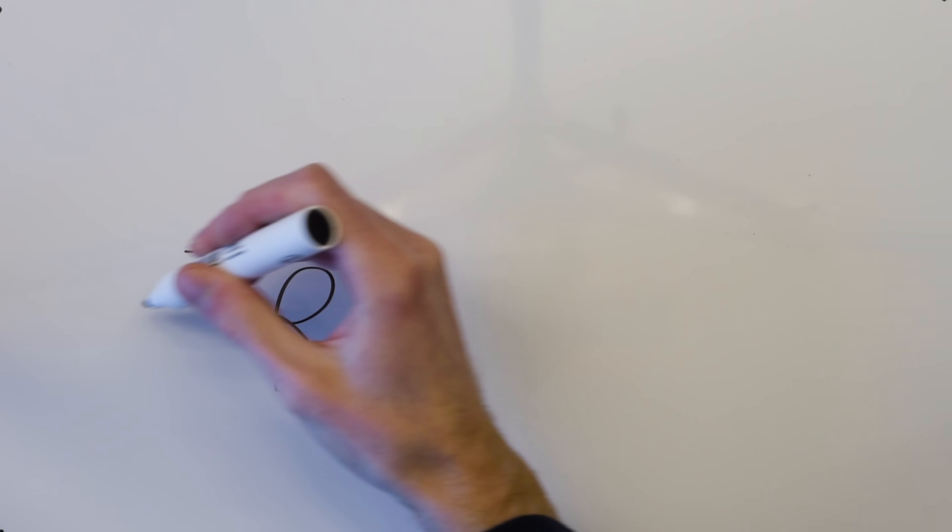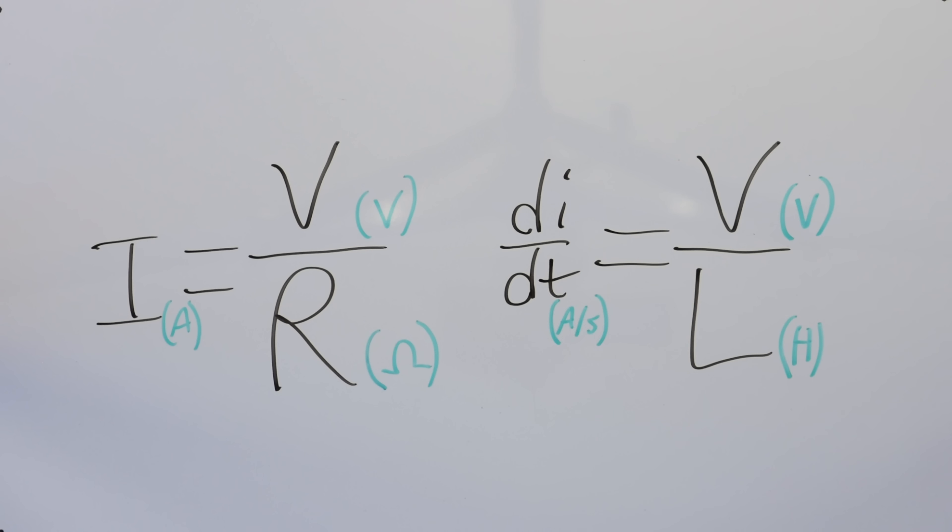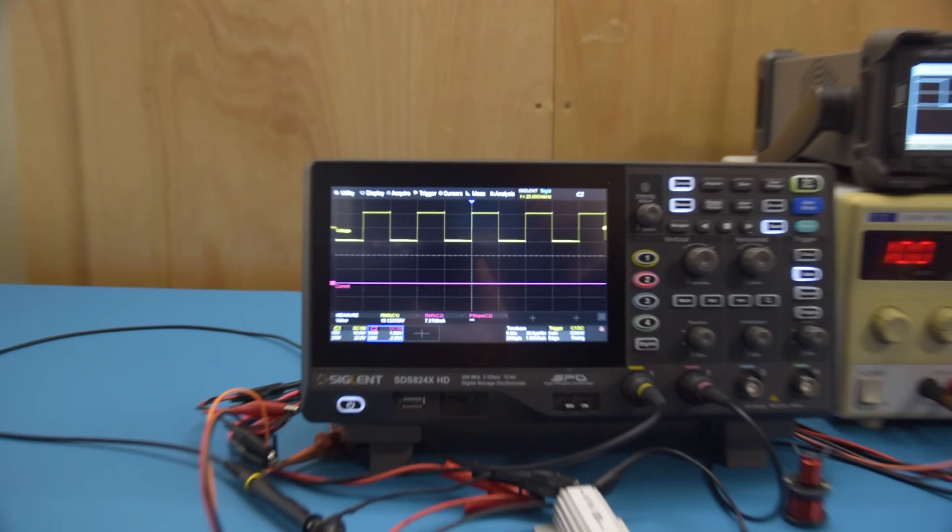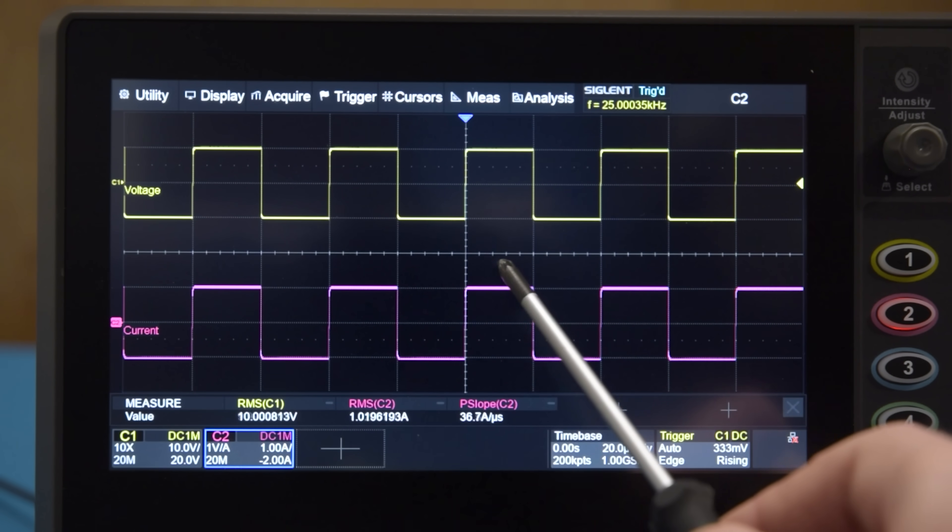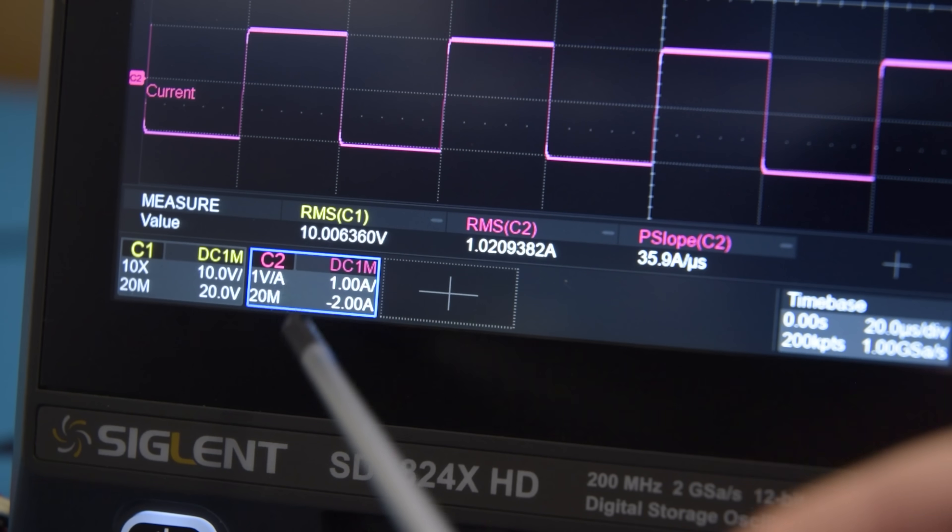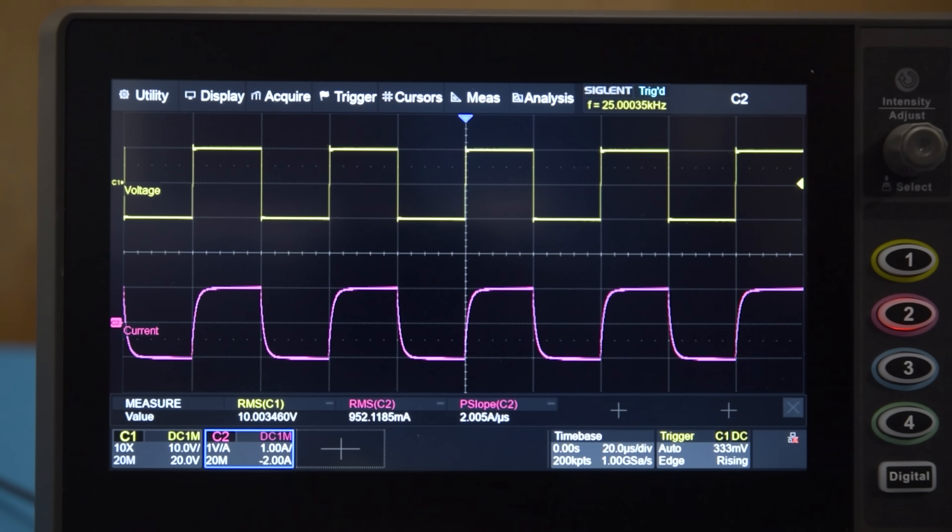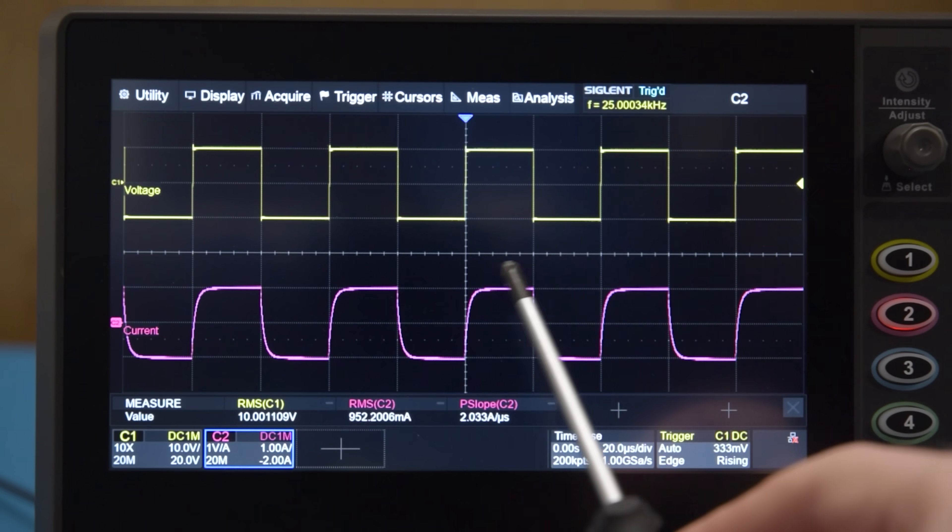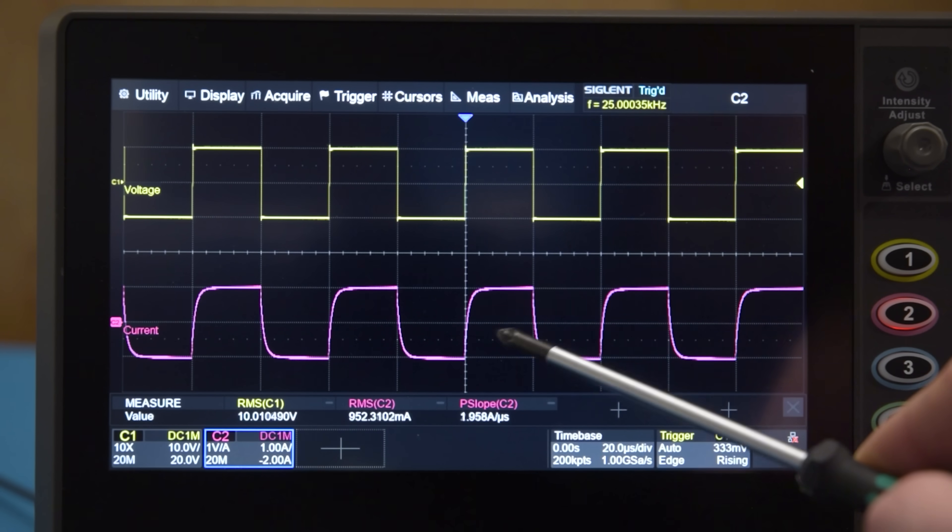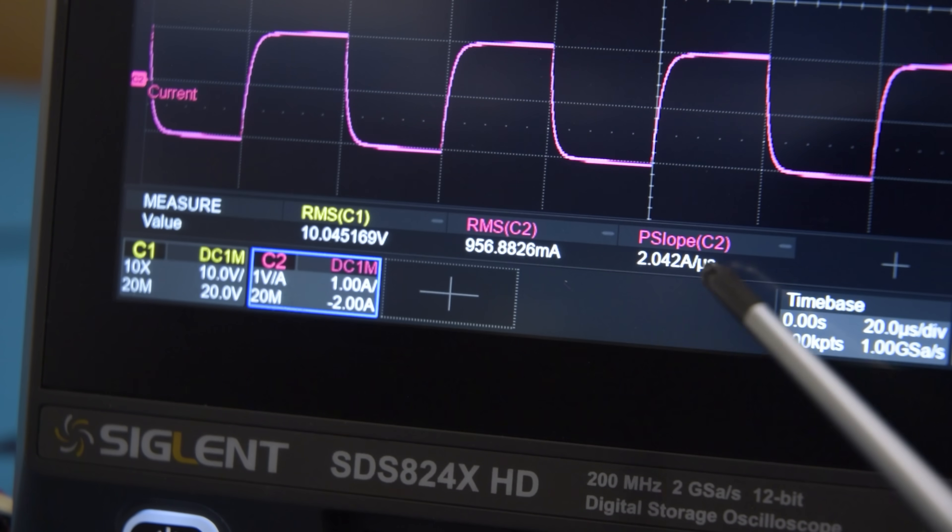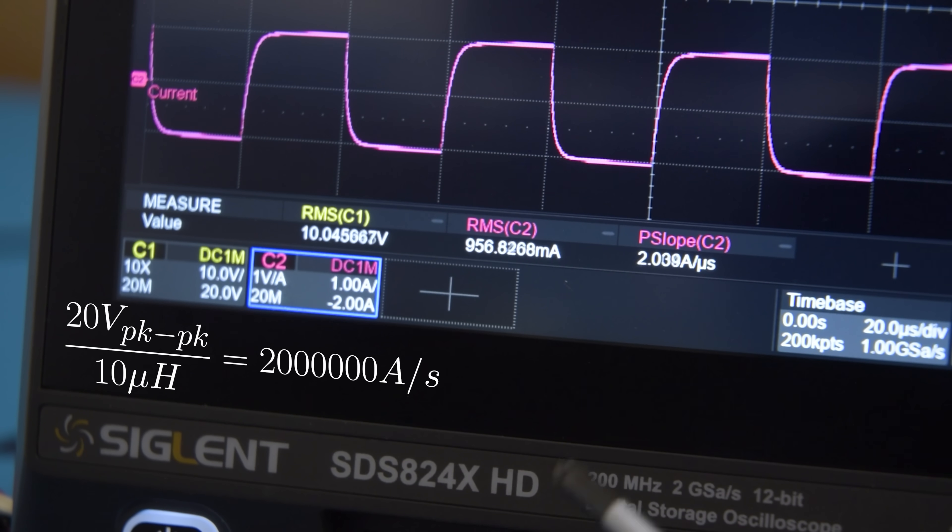So while resistance limits how much current can flow for a given voltage, this effect is easiest to see with a voltage square wave. Here's one I made earlier. The current of a purely resistive load simply follows the shape of the voltage waveform and its amplitude is determined by the resistance. As we can see from these RMS measurements, 10 volts divided by the resistance of 10 ohms gives a current of 1 amp. If we add a bit of inductance to the load, then the current almost follows the voltage, but takes a little bit of time to catch up after a sudden change, because the rate at which it can vary is now limited by that inductance. We can see that limit from the scope's slope measurement, which tells us that at the steepest part of this curve, the current is increasing at 2 amps per microsecond. If we divide the voltage by the inductance, what do we get? 2 million amps per second, aka 2 amps per microsecond.